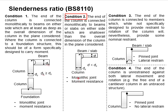Condition 2 refers to a monolithic joint which is moment resistance but the thickness of the beam or slab is less than the width of the column. The degree of rigidity is not as good as condition 1.